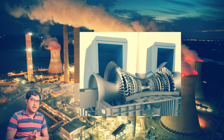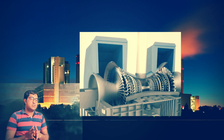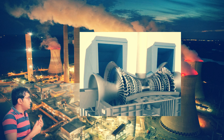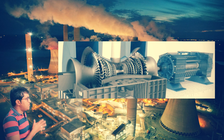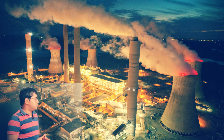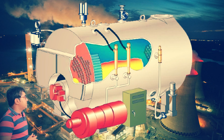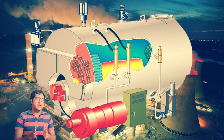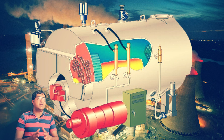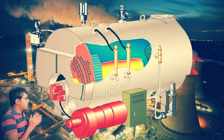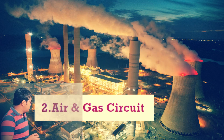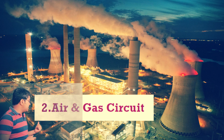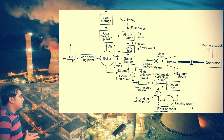This superheated steam then expands into the turbine. The turbine is the output device, also called an expander, and its function is to produce output. Whatever electricity is generated in the generator is supplied for domestic as well as industrial use. For combustion in the boiler, we require oxygen and fuel — oxygen is supplied through air. We will now discuss the air and gas circuit.